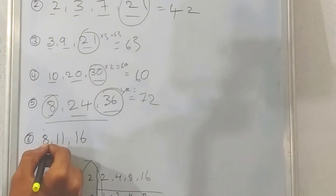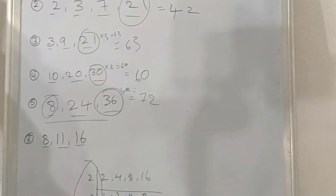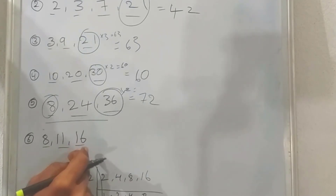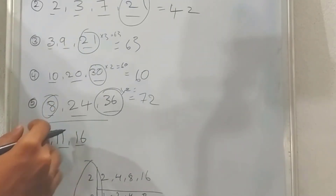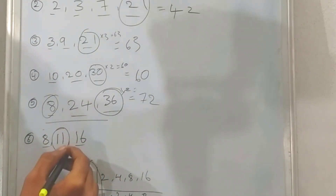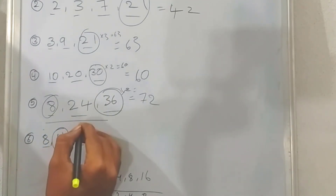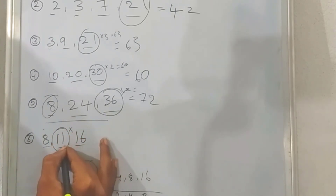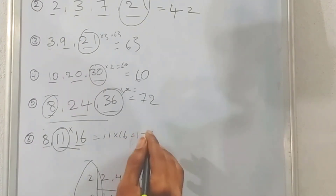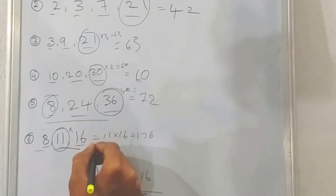The next problem is 8, 11, 16. We apply this process here. We have 8 and 16, which are the same. We have 11 — 11 is a prime number. It's easy to use. 11 is the same factor. The answer is 176. Here we have 176: 8 is the same, 11 is the same, 16 is the same. So the answer is 176.